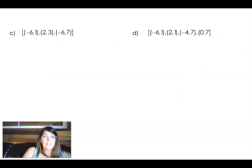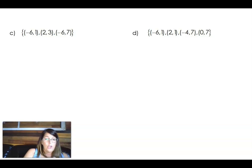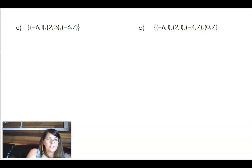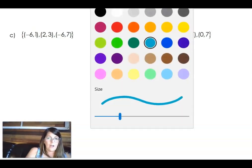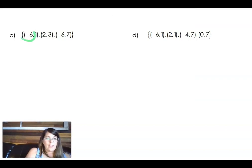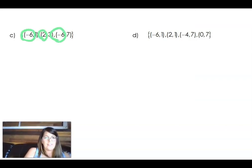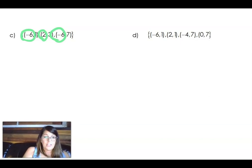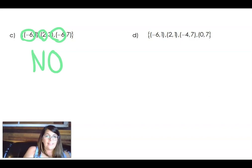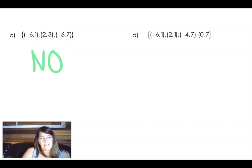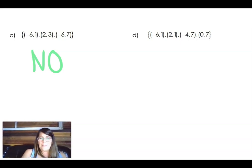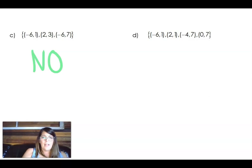So now I'm looking at this one. This is ordered pairs. So I'm going to look at the X's. Remember, it's all about the X. So I've got a negative 6, a 2, and a negative 6. Oh my gosh, this machine is broken because when I look at the stuff that goes with it, one time you put in the negative 6, and it spits out a 1. Another time you put in the negative 6, and it spits out a 7.